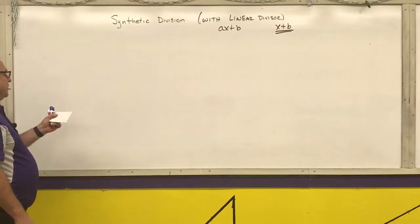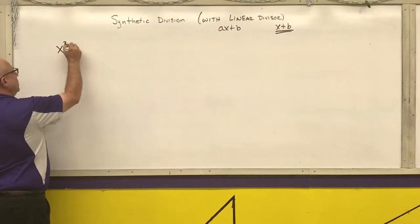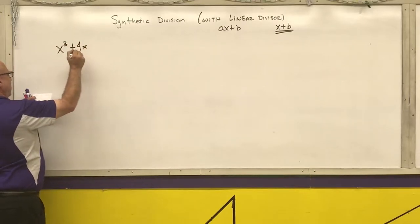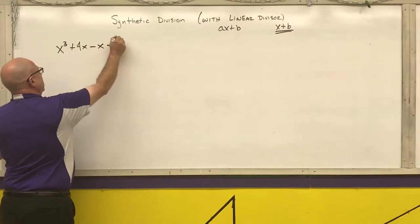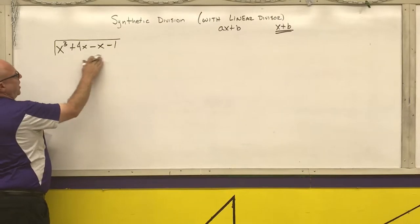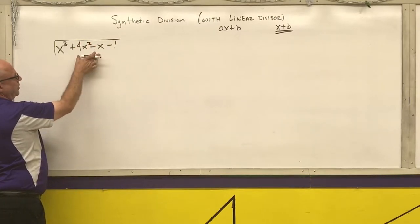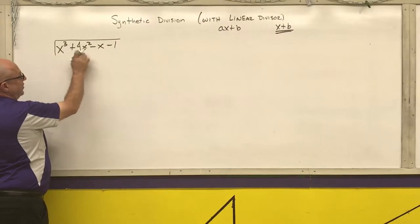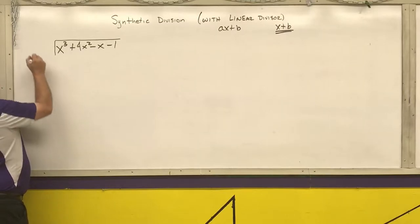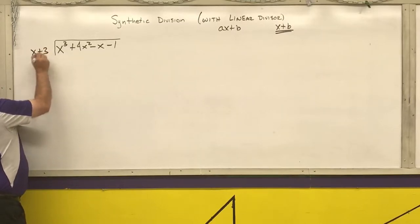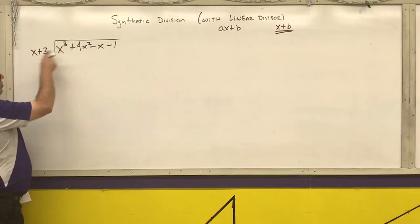First I'm going to do regular long division again, just to show you I get the same answer. As a reminder, when you write out your regular long division, your dividend needs to have every term — if you're missing a term you need to put a zero in there. And my divisor is on the outside.